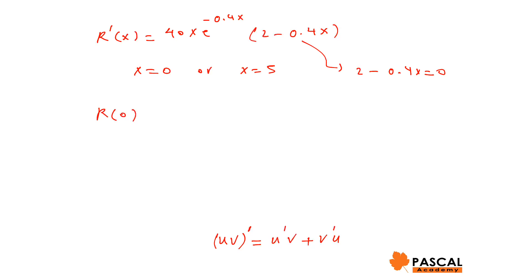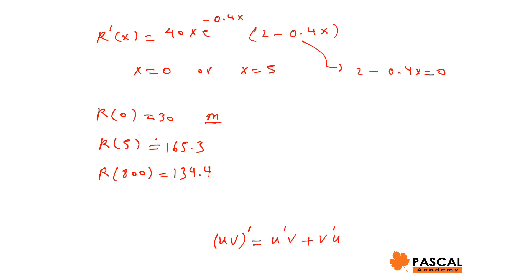Now we evaluate R at 0, 5, and 800. R(0) = 30, R(5) ≈ 165.3, and R(800) ≈ 134.4. The minimum is 30 and the maximum is 165.3. Therefore, a monthly revenue of $165,300 is achieved when 500 units are produced and sold.